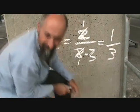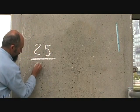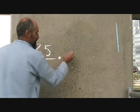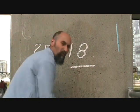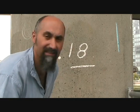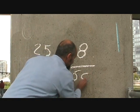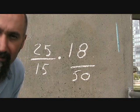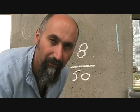Let's do a harder one — two fractions multiplied together. Let's do 25 over 15 times 18 over 50. Now let's break these numbers down. 18 breaks down to 2 times 9, and 9 breaks down to 3 times 3.